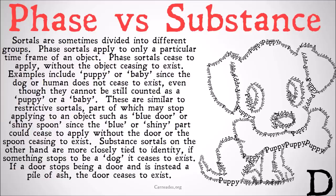Substance sortals, on the other hand, are much more closely tied to the identity of the object. If something stops being a dog, then it ceases to exist. If a door stops being a door and is instead a pile of ash, the door ceases to exist — in a way that the puppy that got older didn't cease to exist.